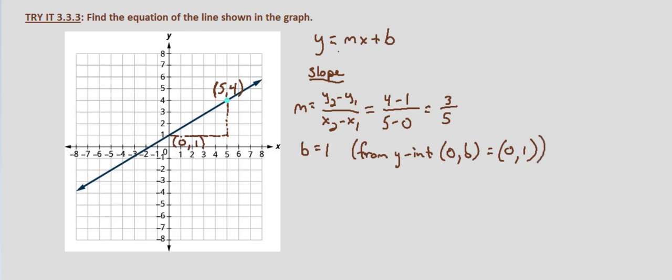So now we just simply plug this into our slope-intercept form, y equals mx plus b. So y equals, we determined, m to be 3 fifths x plus b, we determined to be 1.